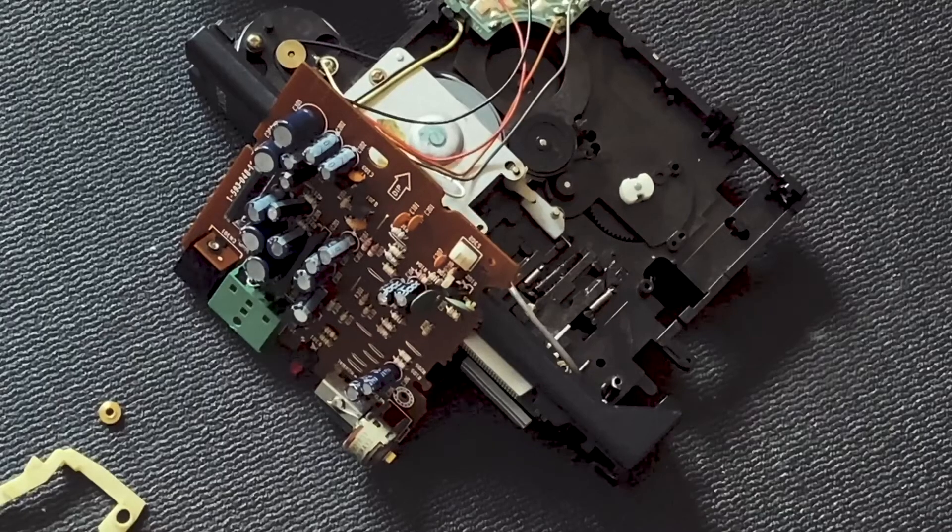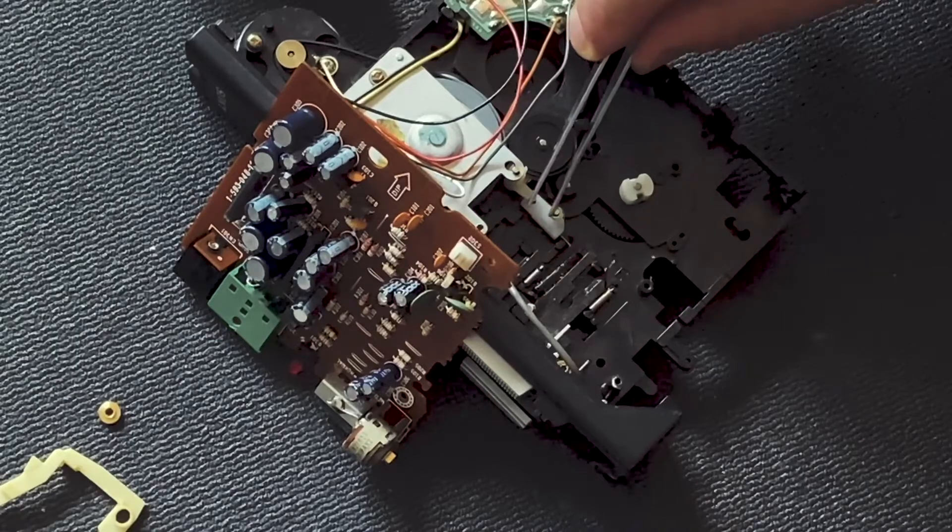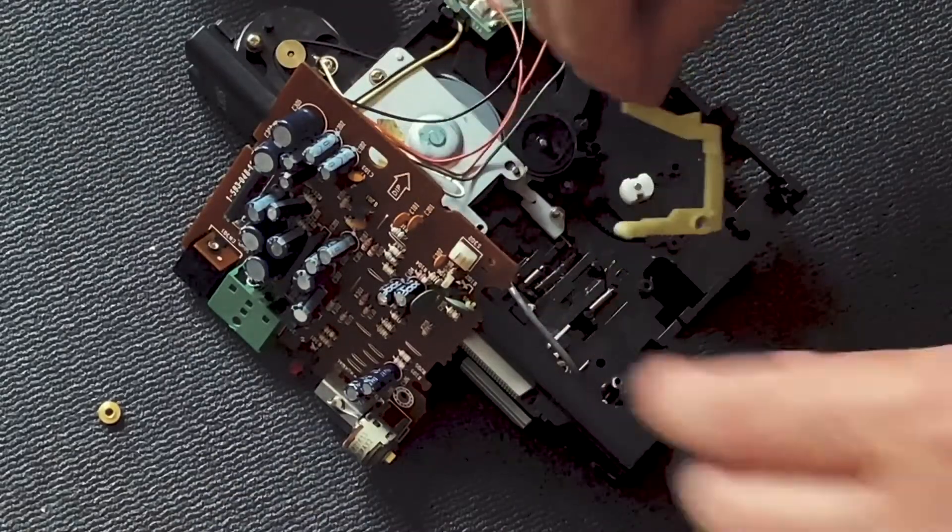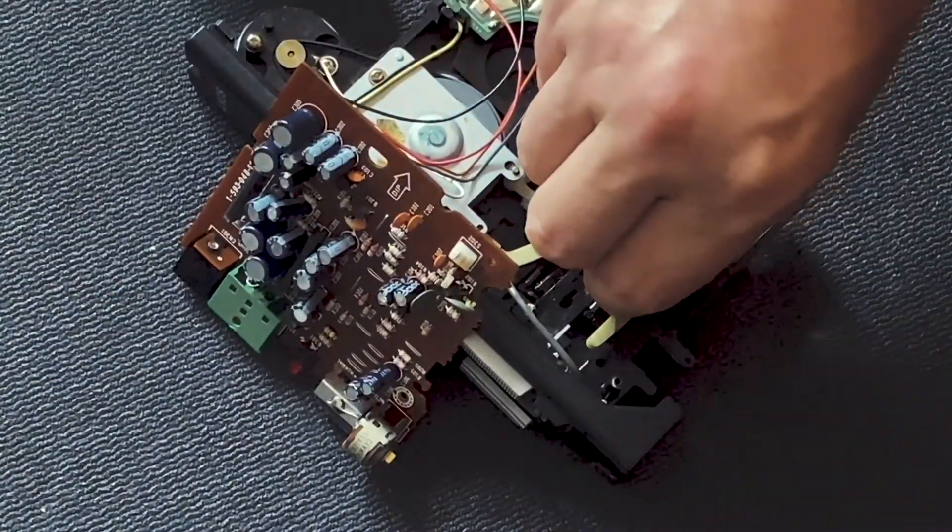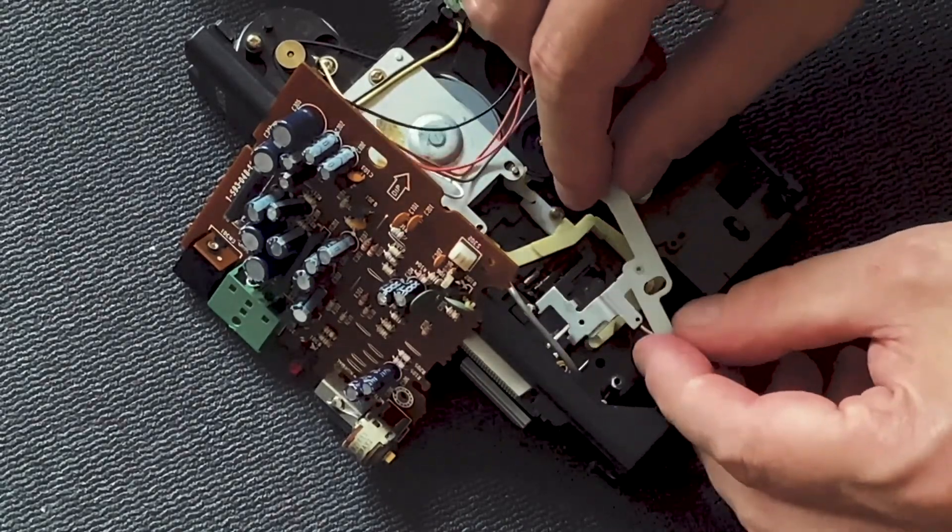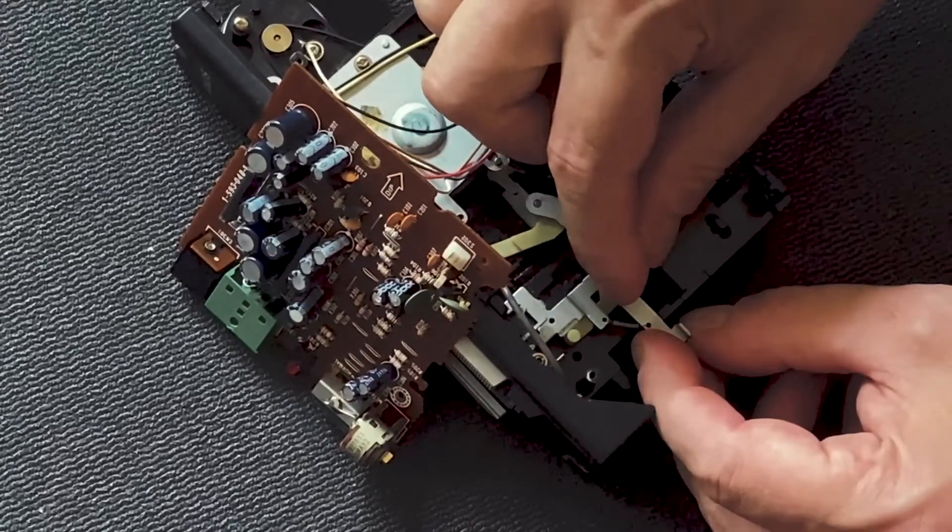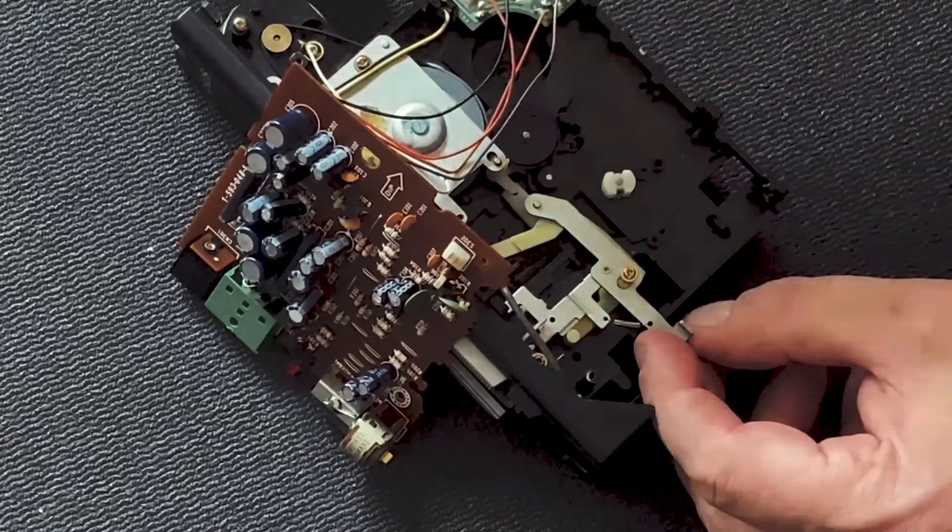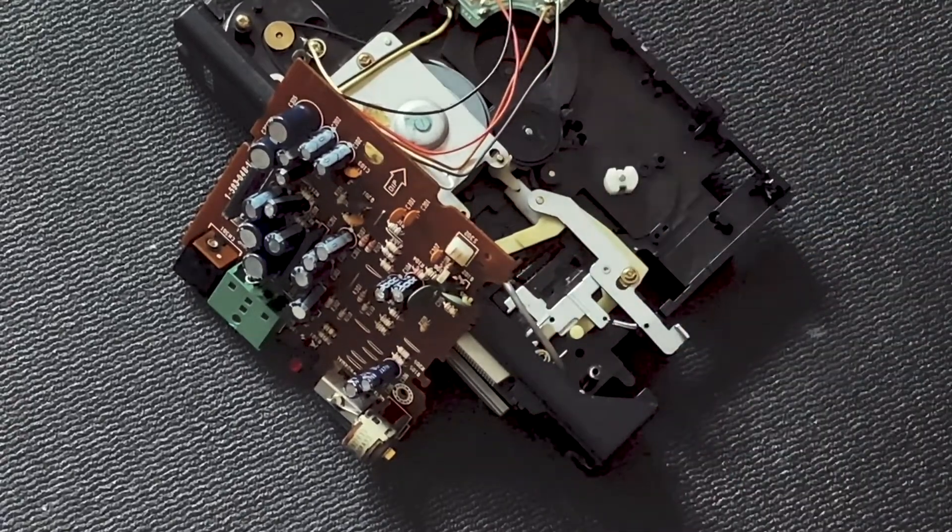Step 10: Reassemble the eject mechanism. First, place the distance ring, then the play mechanism. Insert the screw socket, followed by the eject mechanism itself. Make sure it sits correctly as shown in the reference images. Reinsert and tighten the holding screw. Finally, put the screw washer back on, pressing it down slightly so it sits tight.